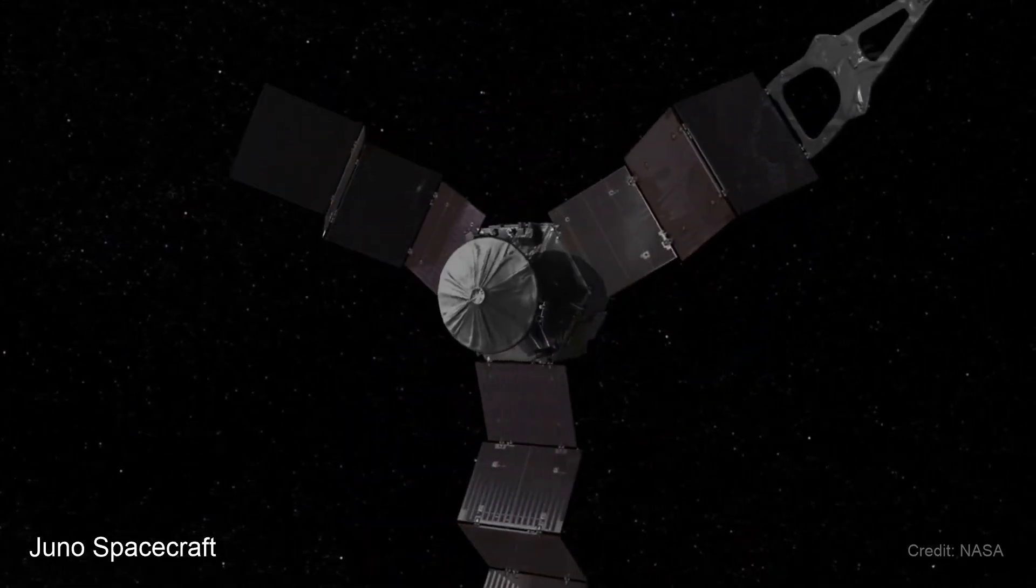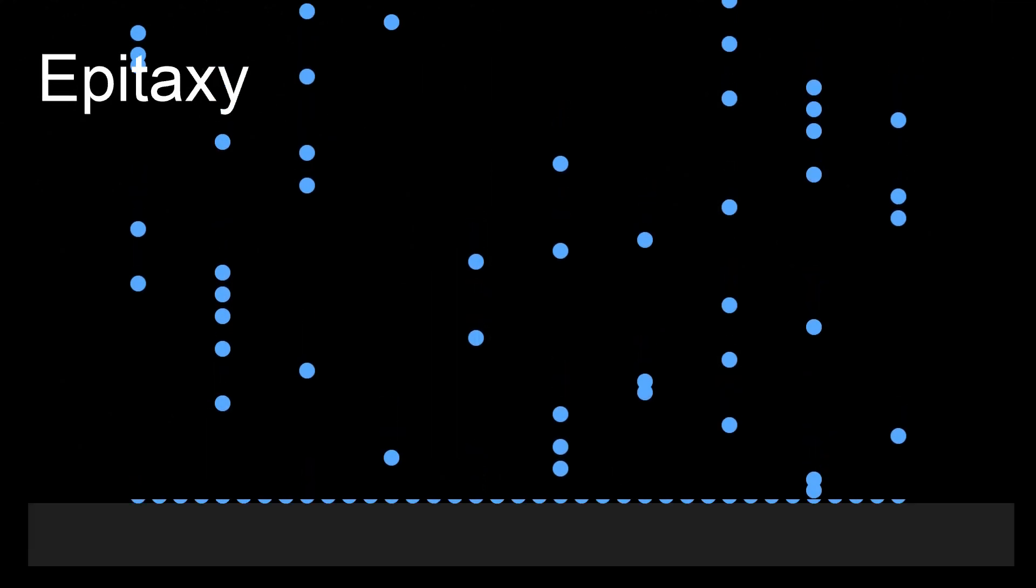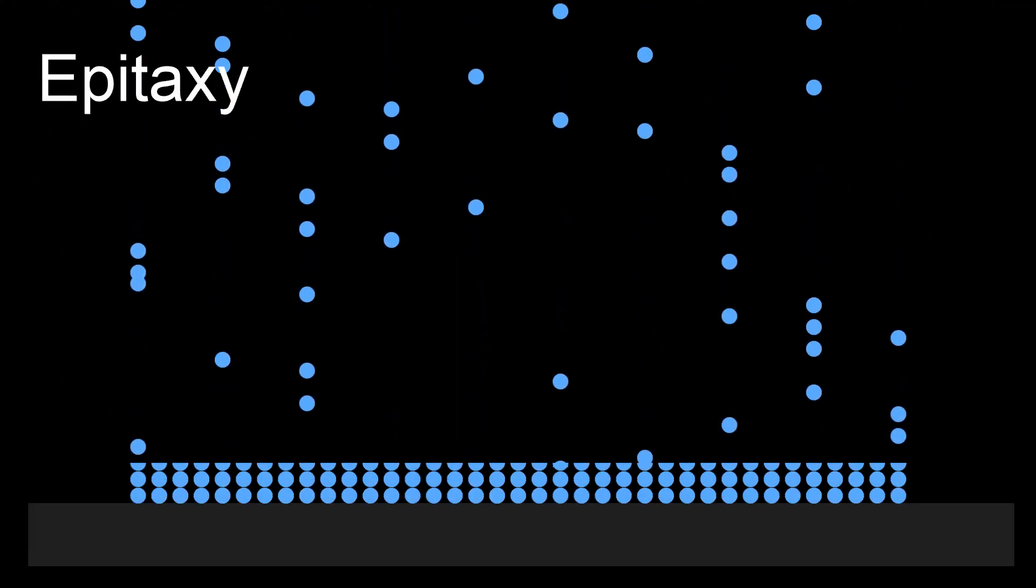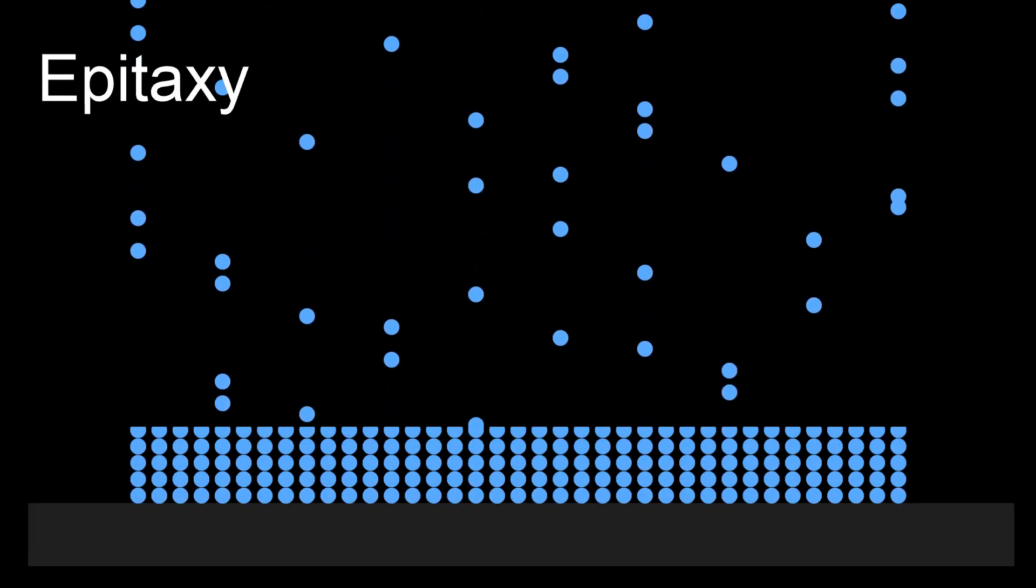So, the process that's used to create these thin films is called epitaxy. The growth of a thin crystalline film onto a crystalline substrate.